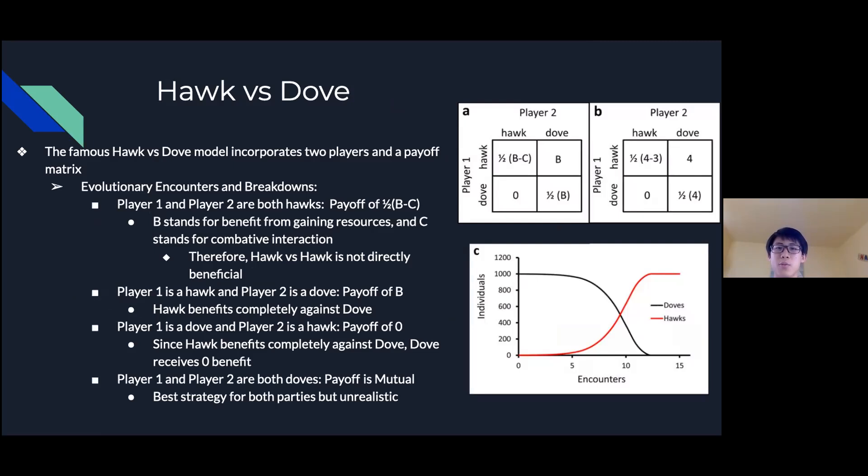The famous Hawk vs Dove model incorporates two players in a payoff matrix. When player 1 and player 2 are both hawks, the payoff is 1/2(B-C), with B standing for benefit from gaining resources such as food and water and C stands for combat between the two. Since it is hawk versus hawk it isn't directly beneficial because they will compete over resources such as territory. The second scenario is player 1 is a hawk and player 2 is a dove which has a payoff of B, which means it's completely beneficial and this makes sense since a hawk completely benefits over a dove.